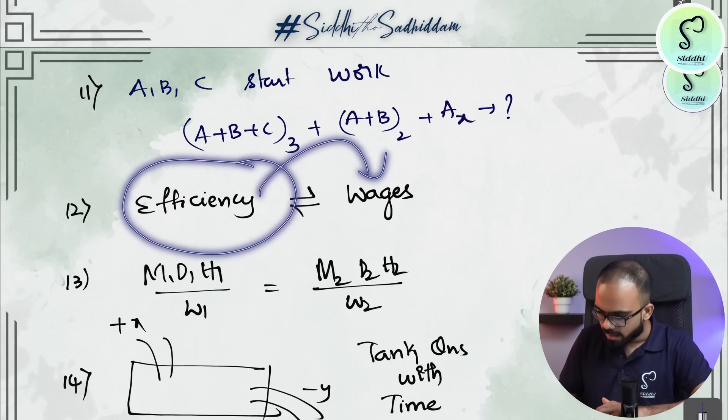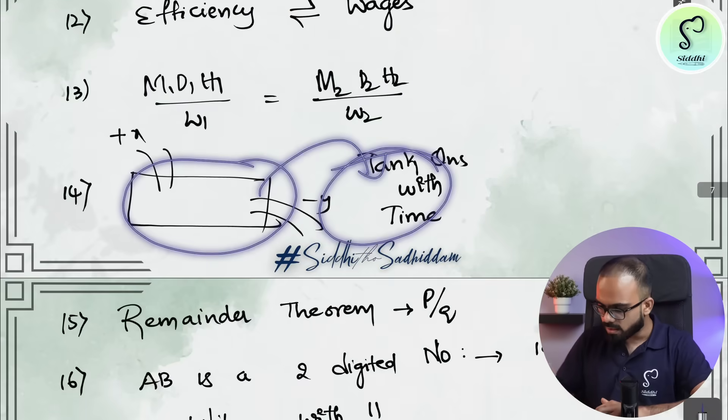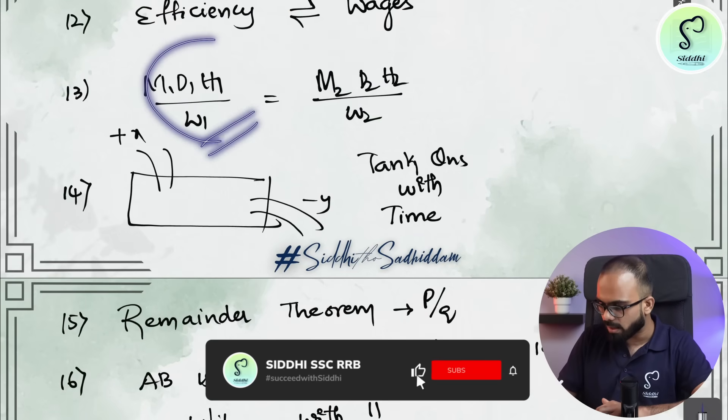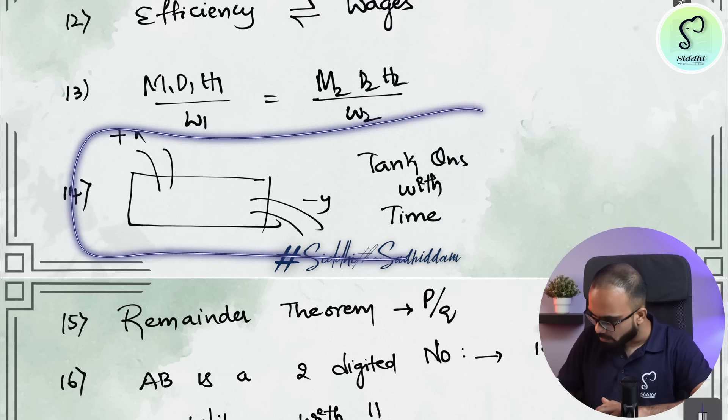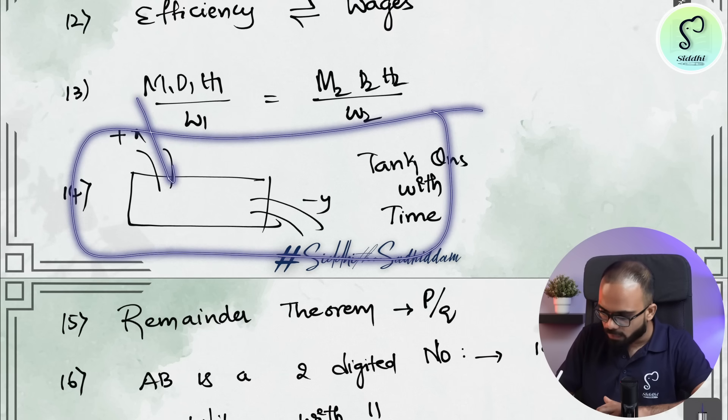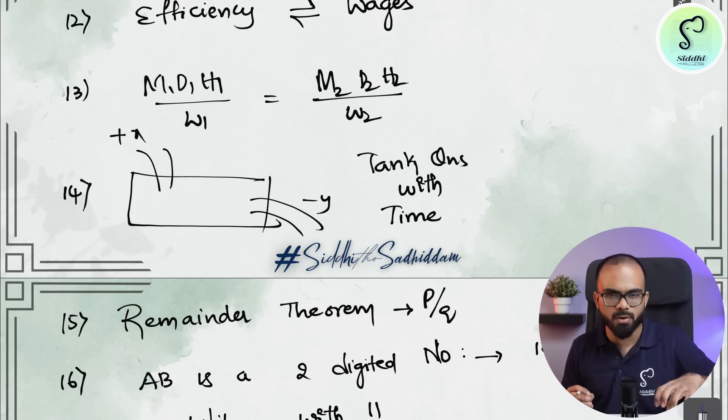Then efficiency questions where wages are involved. Questions on M1, D1, H1 by W1 is equal to M2, D2, H2 by W2.